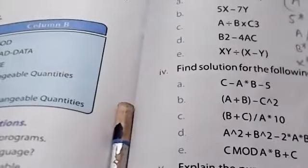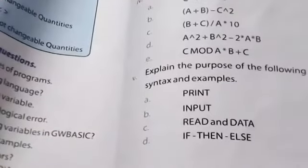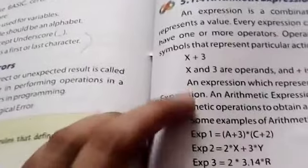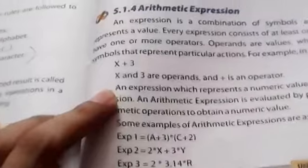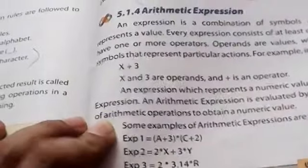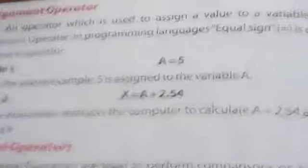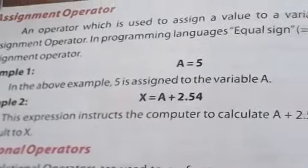Next, you have arithmetic expressions. Explain different types of operators with examples. An expression is a combination of symbols and operators. There are three types: arithmetic, assignment, and relational operators. The assignment operator is used to assign a value to a variable. For the relational operator, you need to write the comparison table.